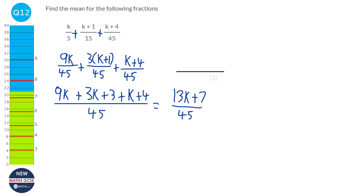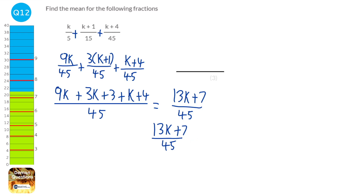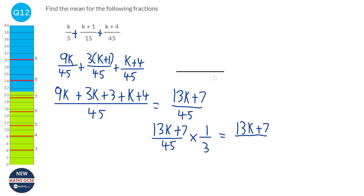To work out the mean, we divide 13k plus 7 over 45 by 3. Using KFC — keep, flip, change — we keep the first fraction, change divide to multiply, and flip the second fraction to times by one third. The numerator stays the same, and the bottom multiplies by 3 to give 135. So the answer is 13k plus 7 over 135.